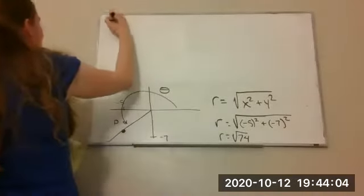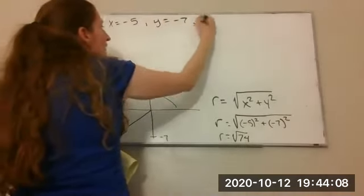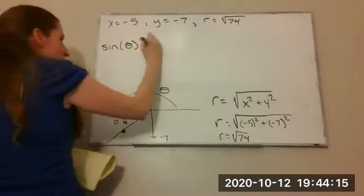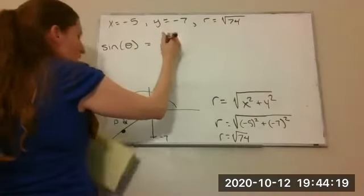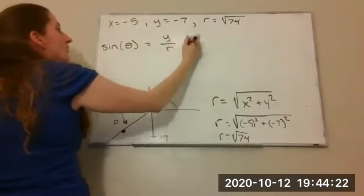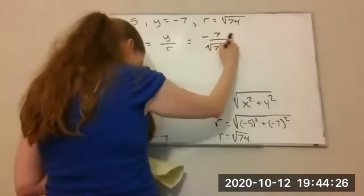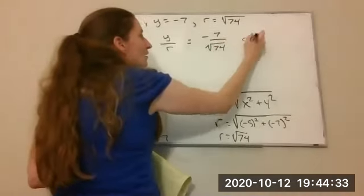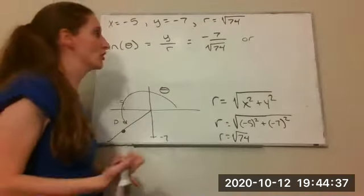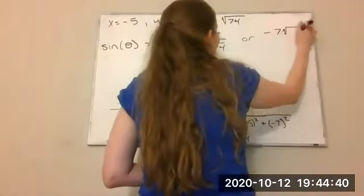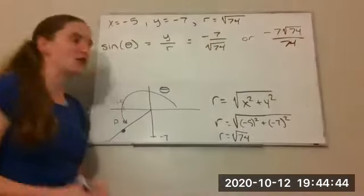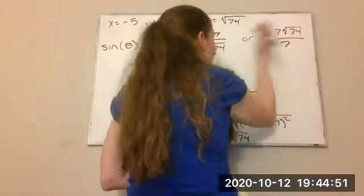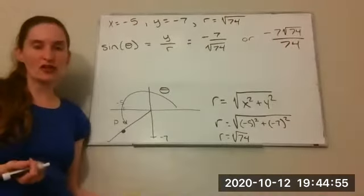So: x is negative 5, y is negative 7, r is the square root of 74. Sine of theta equals y over r, so I get negative 7 over the square root of 74. If I need to, I can rationalize the denominator by multiplying by the square root of 74 on both top and bottom, giving me negative 7 root 74 over 74. Some classes and homework systems may require rationalizing the denominator.